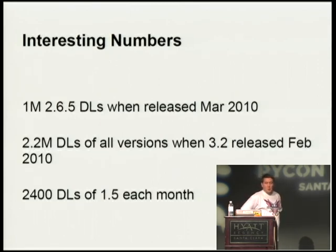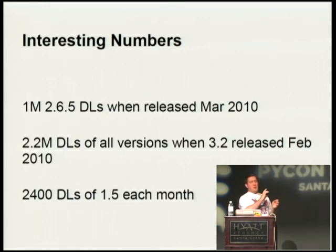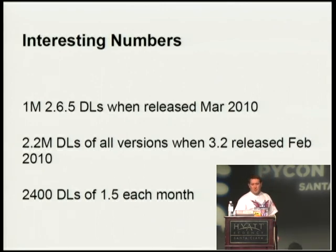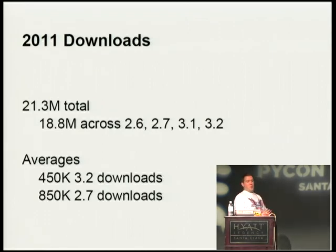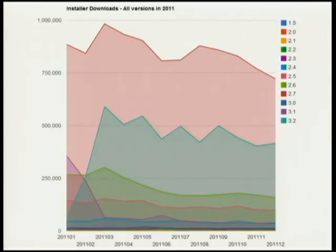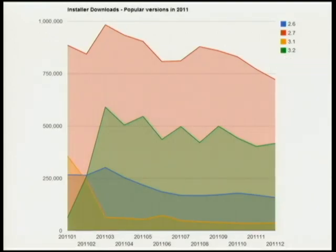A couple more interesting numbers: 1.1 million people downloaded 2.6.5 — the single largest number for any specific point release, in March 2010. When 3.2 came out, that was the biggest month of all total downloads at 2.2 million. About 2,400 downloads of 1.5 still happen each month going back to 2006. In 2011, looking at just the last year, there were 21 million downloads of Python on Windows. Comparing 2.7 and 3.2, 3.2 is a little over half at 450,000 versus about 850,000.